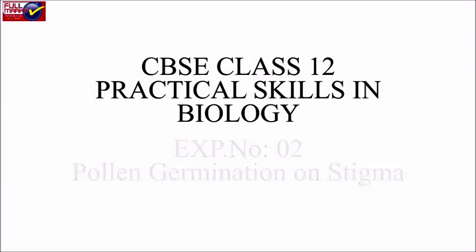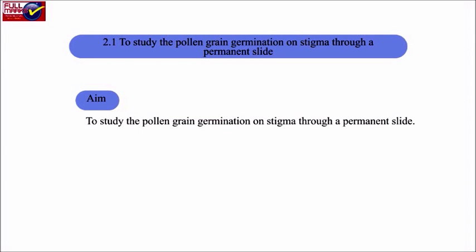Experiment 2.1: To study the pollen grain germination on stigma through a permanent slide. Aim: To study the pollen grain germination on stigma through a permanent slide.